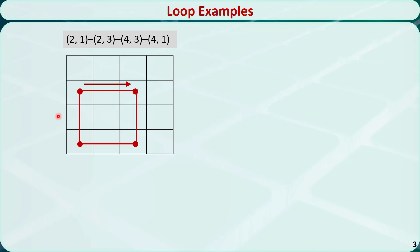Is this a loop? We need to check the definition. It does contain at least 4 cells — in this case, exactly 4. Condition 1: any two consecutive cells lie in either the same row or same column. For example, this cell and this cell are in the same row; this cell and this cell are in the same column. This cell and this cell are not in the same row or column, but they are not consecutive cells, so condition 1 is satisfied. Condition 2: no three or more consecutive cells in the same row or column — we cannot find a counterexample, so this is satisfied. Condition 3: the last cell is in the same column as the first cell, so this is satisfied. Therefore, this is indeed a loop.